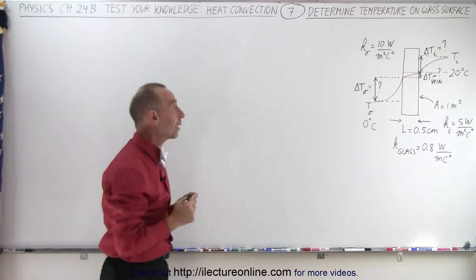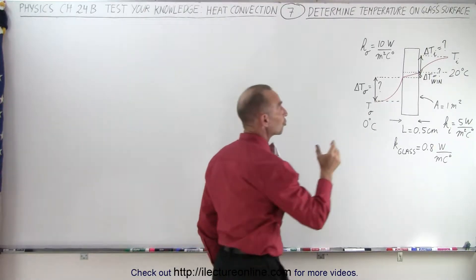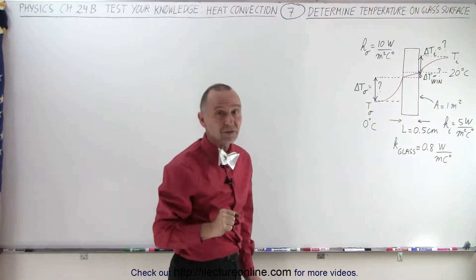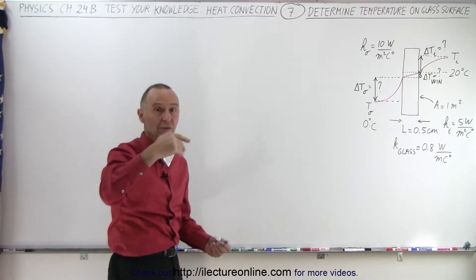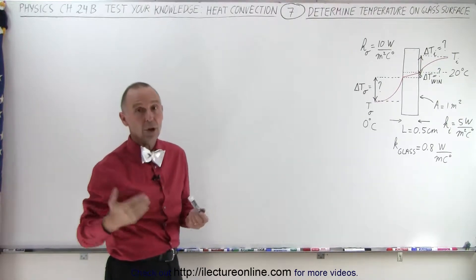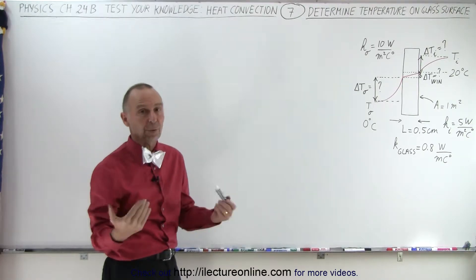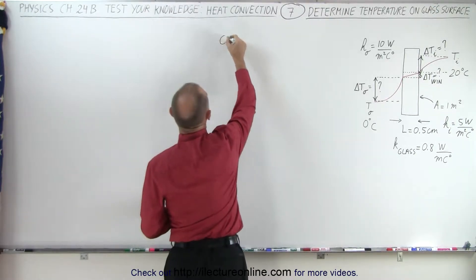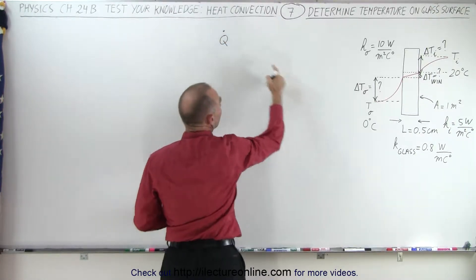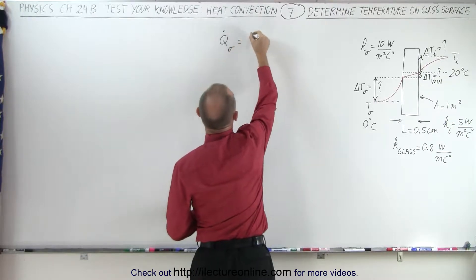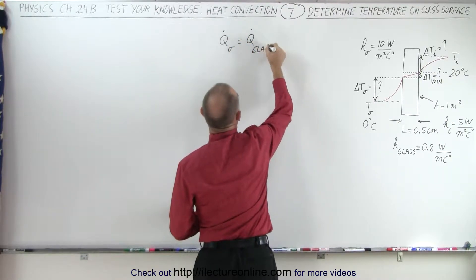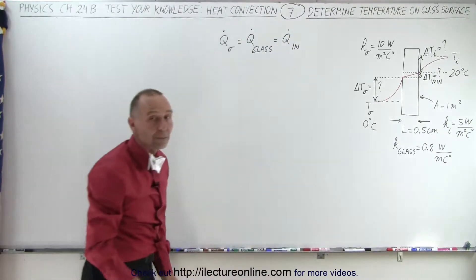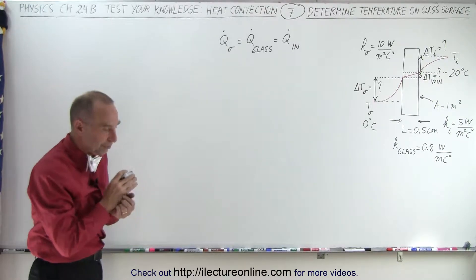It turns out we can rely on one key principle: the amount of heat transferred through the air on the inside, through the glass, and through the air on the outside must be constant. It's like the current through resistors in series — it must be the same. So the heat flow through the outside air must equal the heat flow through the glass, which must equal the heat flow through the inside air.